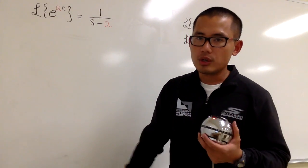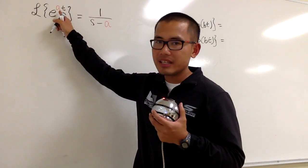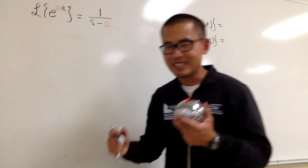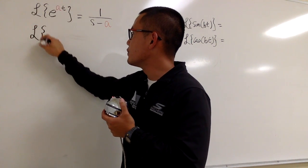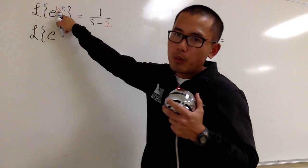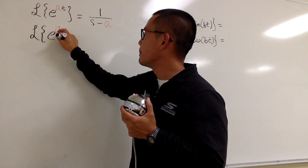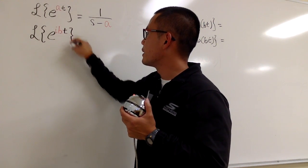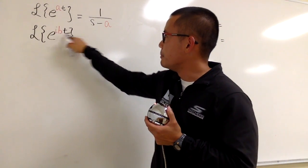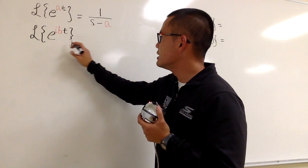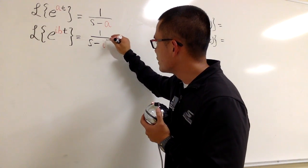a can be any number. It can be 0, it can be 1 half, it can be negative 2, negative 5, whatever you want. Now, I can also plug in a complex value for a to make things work out nicely. I want to have the Laplace transform of e, and I will choose to plug in ib for a. I plug in ib for a, I will also have to plug in ib for a right here. So we know this is equal to 1 over s minus ib.